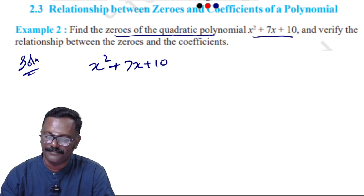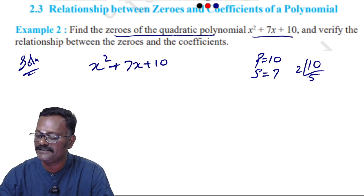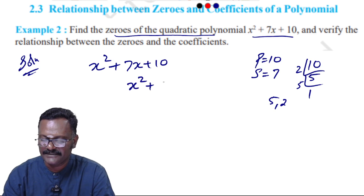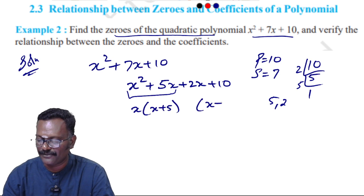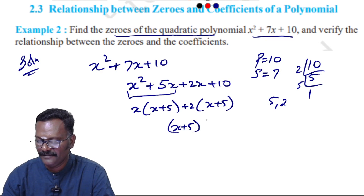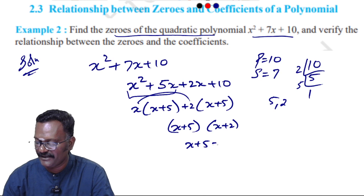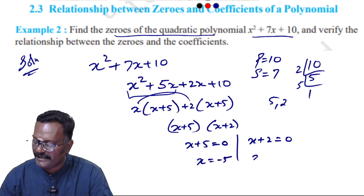The method we use is splitting the middle term. The product is 10 and the sum is 7. By prime factorization: 2 × 5 = 10 and 2 + 5 = 7, so the two possibilities are 5 and 2. So x² + 7x becomes x² + 5x + 2x + 10.